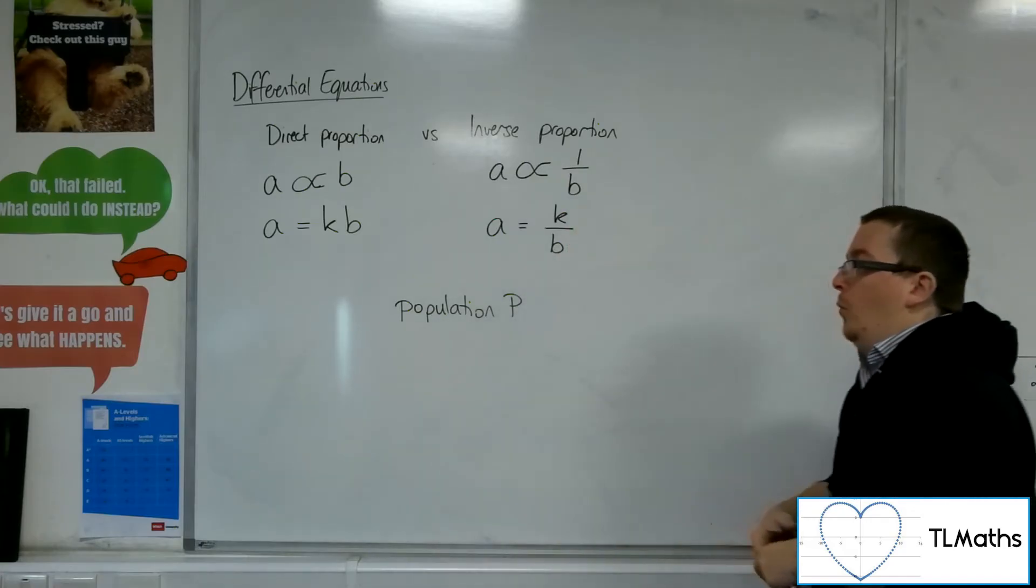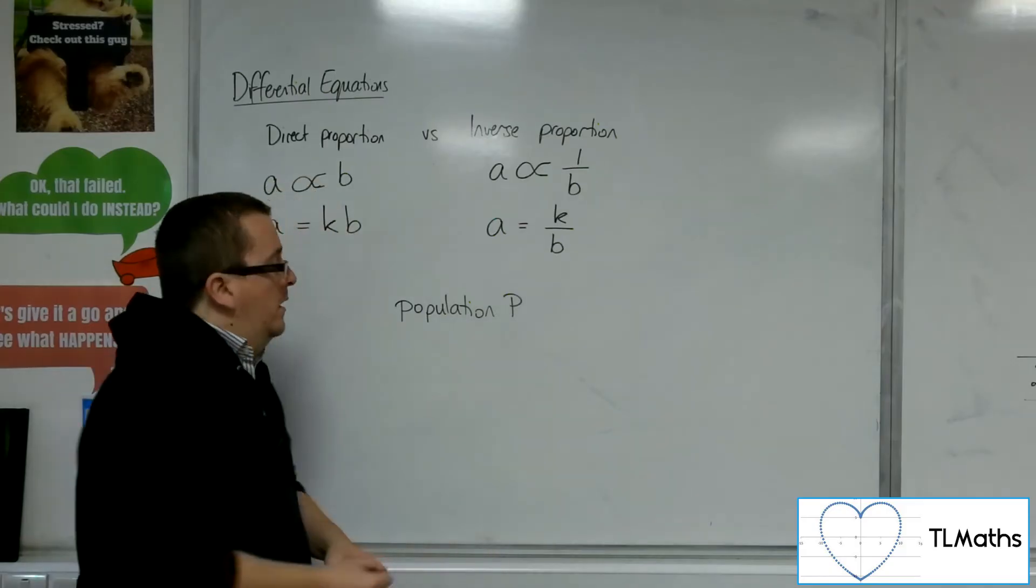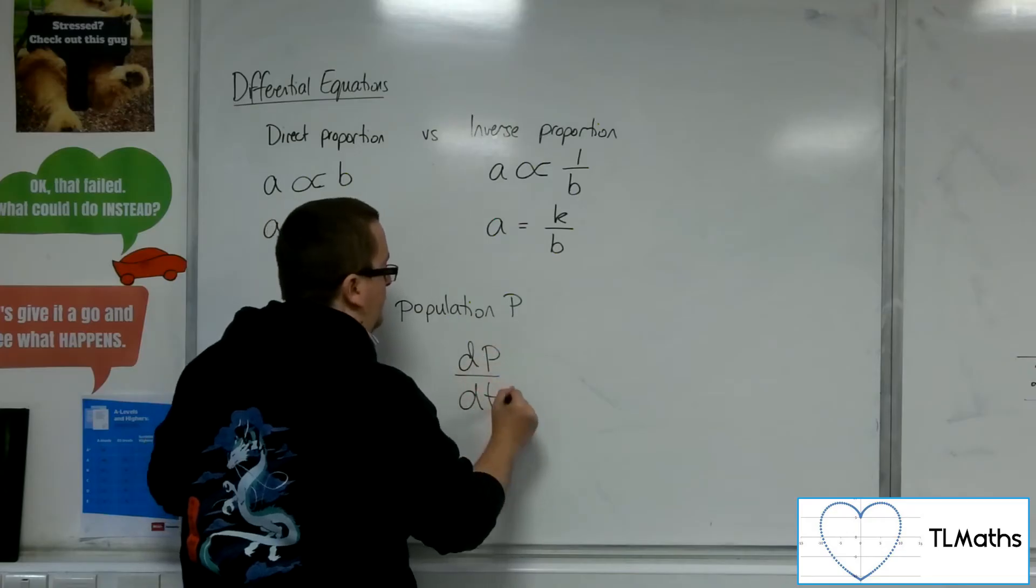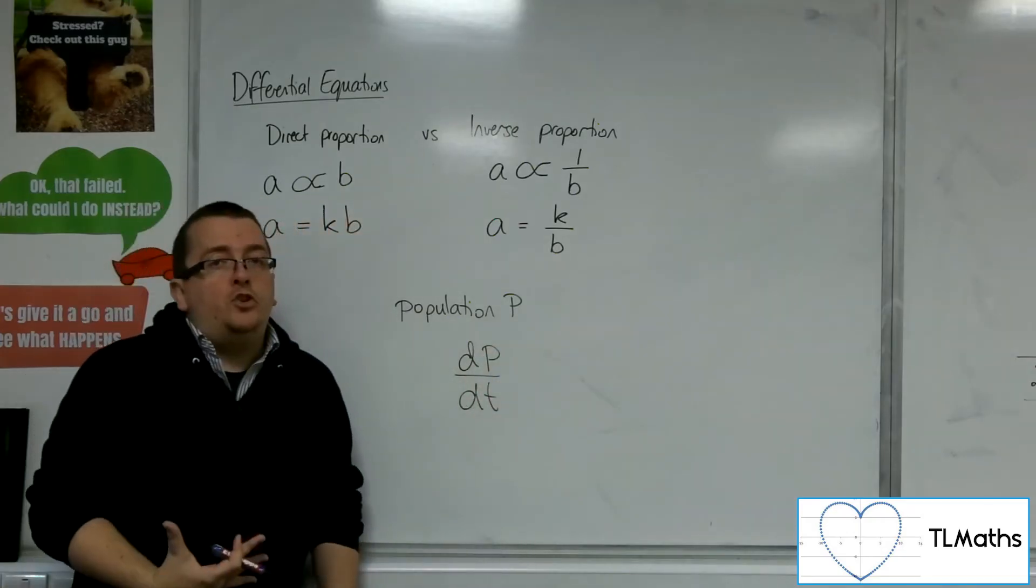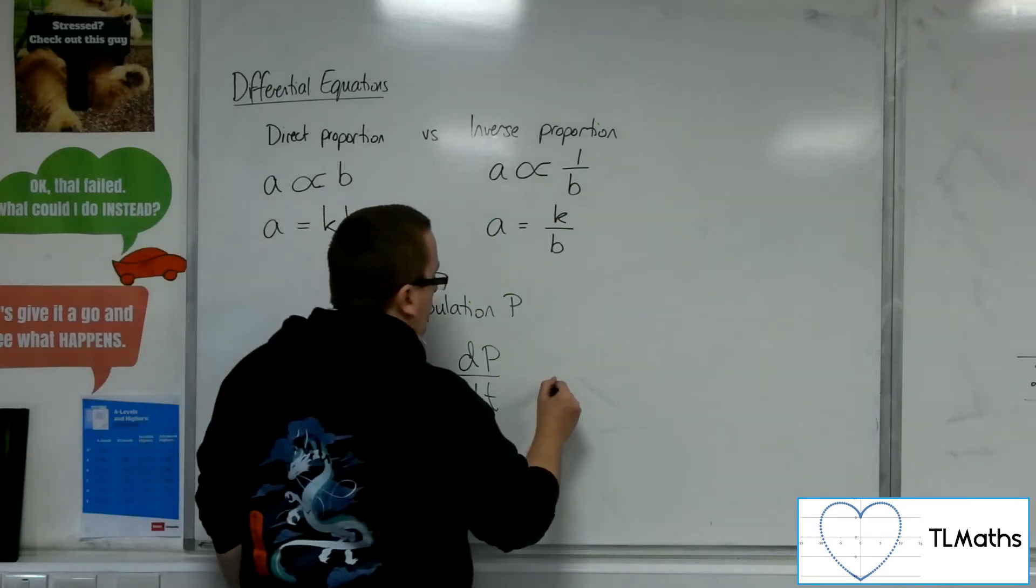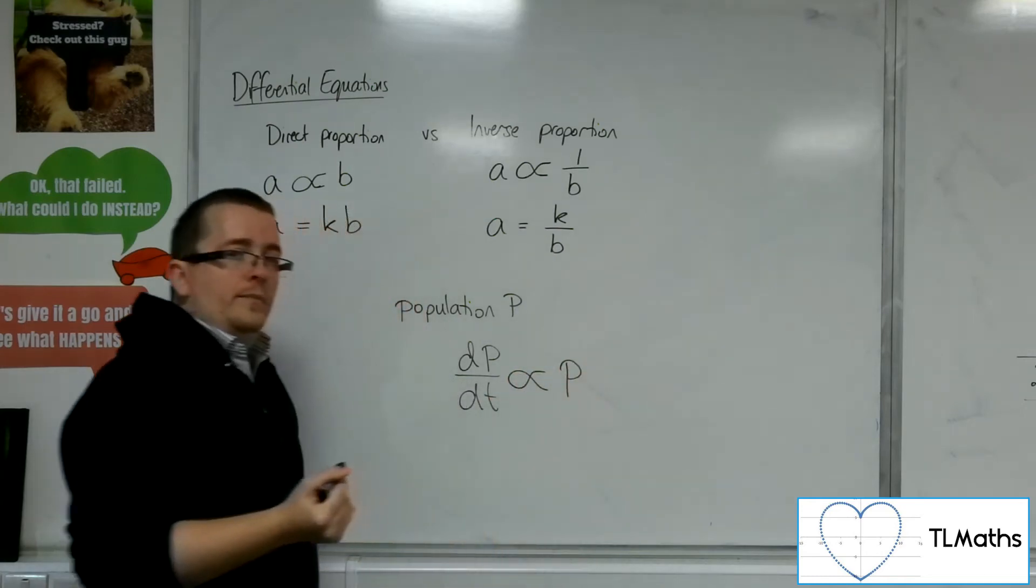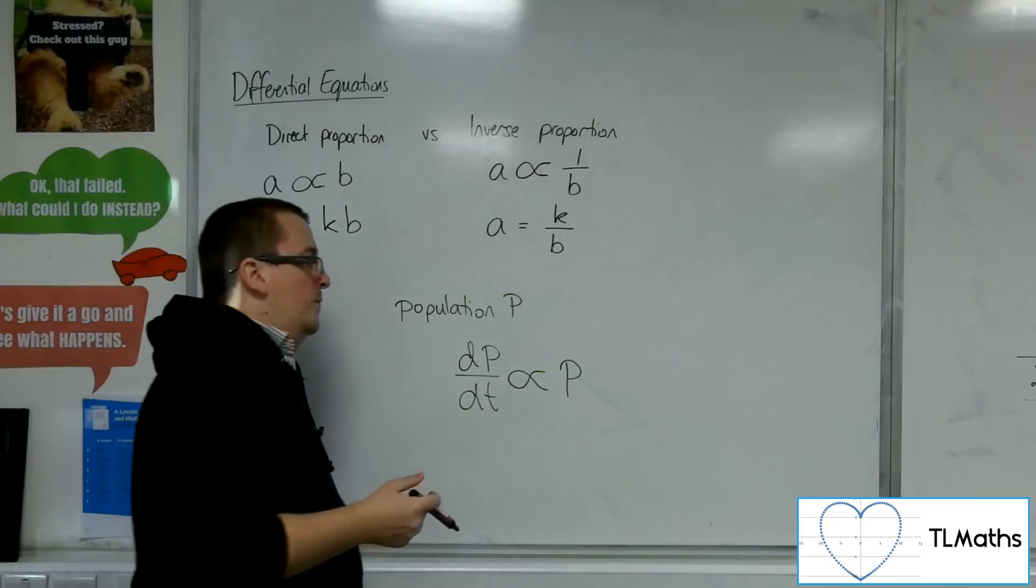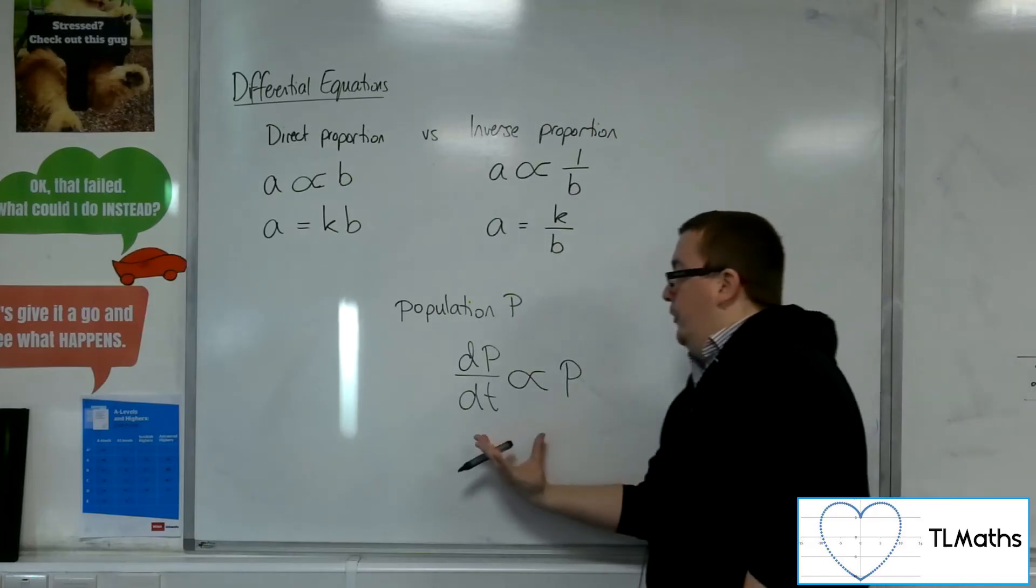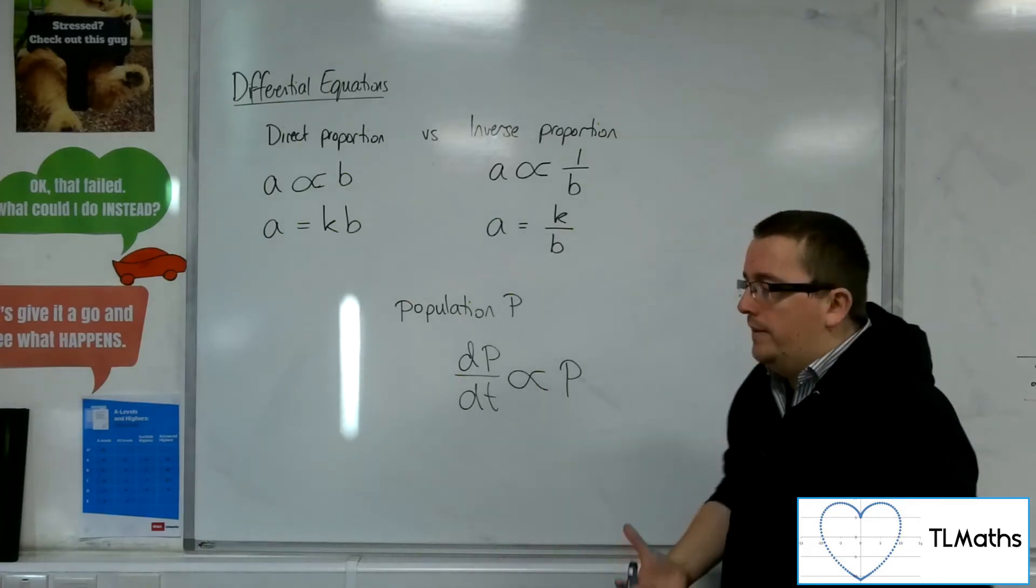If I'm talking about the rate of growth of the population, then I would be talking about dP by dT, the rate of change of the population. And I'm saying that that is proportional to the population. Now that is going from my worded problem to an algebraic one, but it's still not a differential equation because there's no equal sign there.